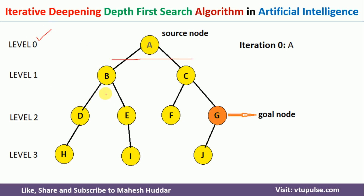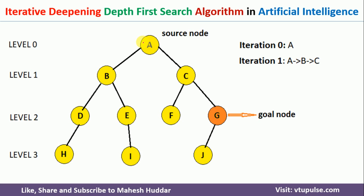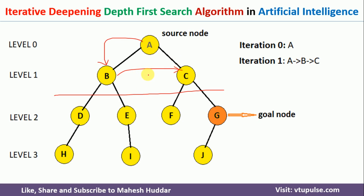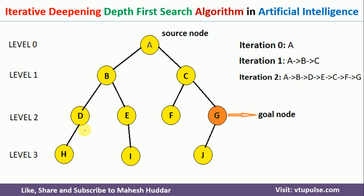So we extend the level to level 1, considering only nodes A, B, and C. We start again at A, go to B, but we cannot go beyond level 1. So we try the right-hand side and go to C. We still haven't reached the goal node in this iteration, so we increase the iteration — iteration 2 with level equivalent to 2.